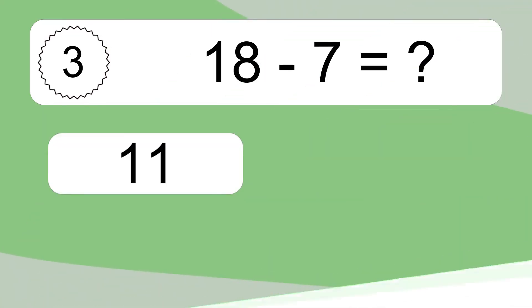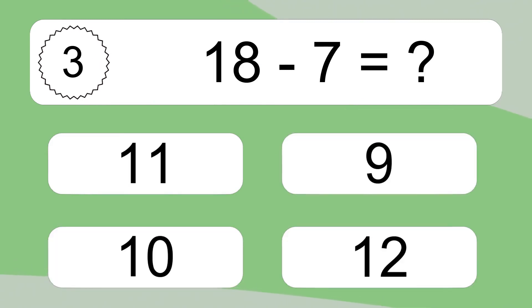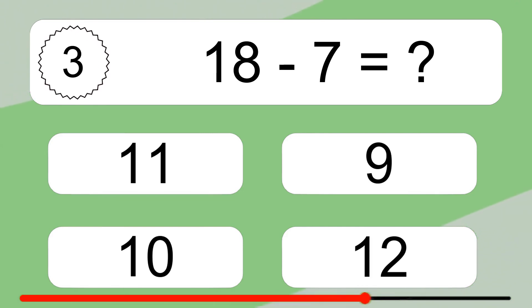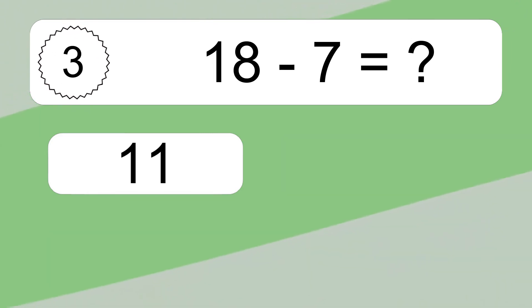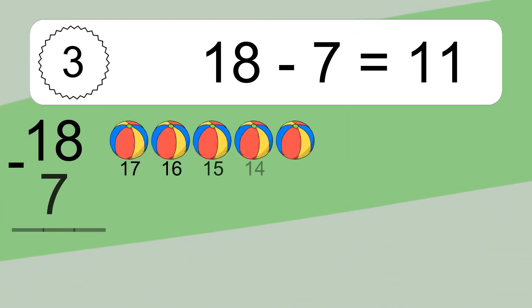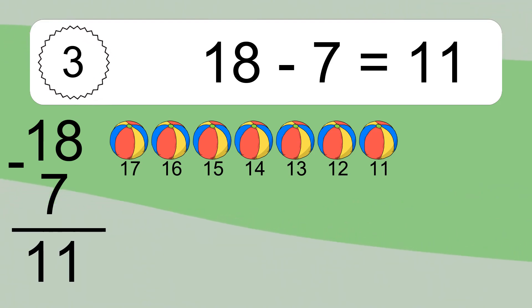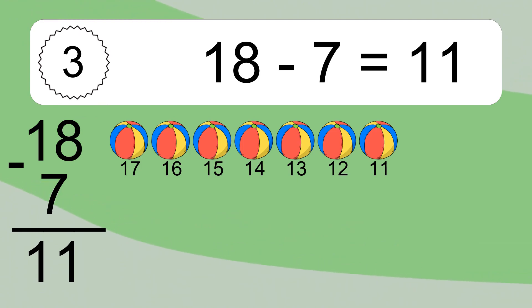18 minus 7 equals what? 18 minus 7 equals 11. Let's count it: 17, 16, 15, 14, 13, 12, 11.